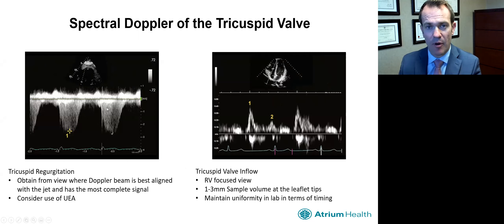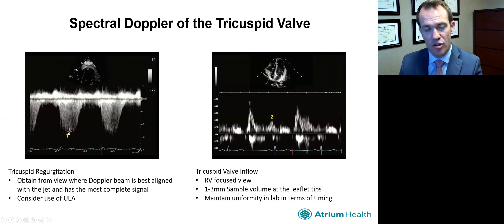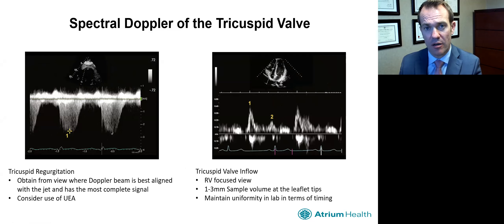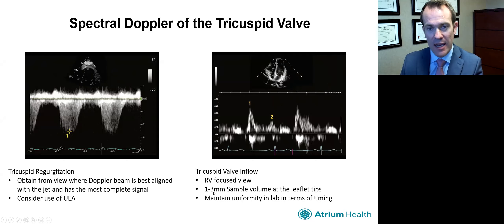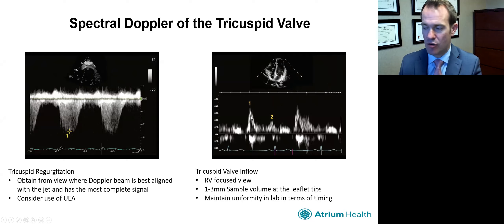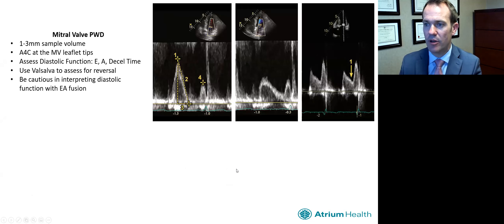Using spectral Doppler of the tricuspid valve, we use continuous wave Doppler across the tricuspid valve, which is really important to get an estimate of the right ventricular systolic pressure. If we can't get a good signal, we should consider using ultrasound enhancing agents. Occasionally, we will measure the RV inflow view in a manner similar to the mitral valve.